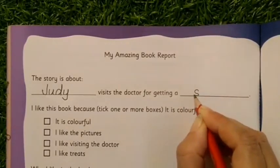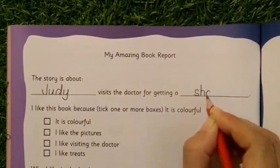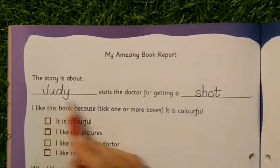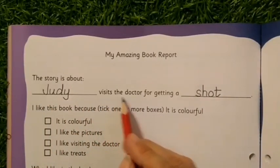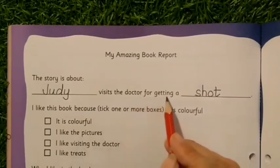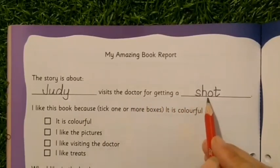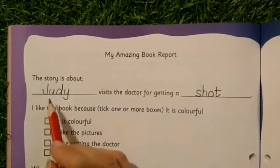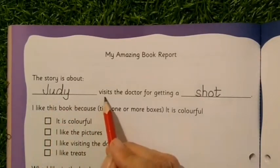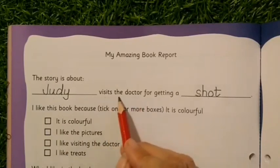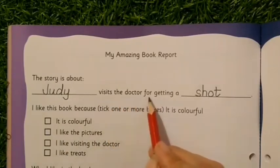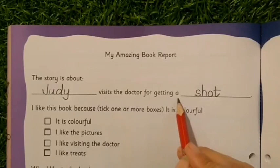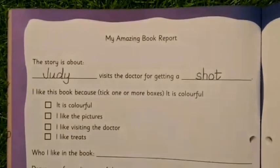A shot means injection, so here we have to write the word 'shot.' Let us write it. Now let's read the sentence: 'Judy visits the doctor for getting a shot.' I will read one word, pause, and you repeat after me: Judy — visits — the doctor — for getting — a shot.